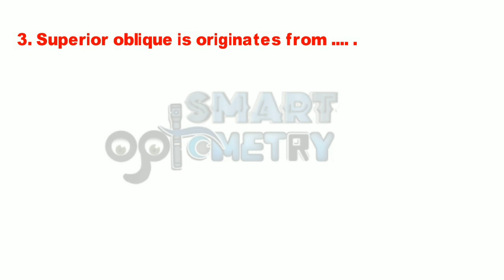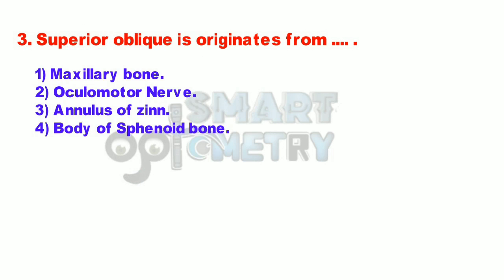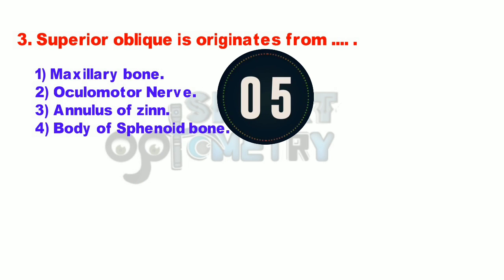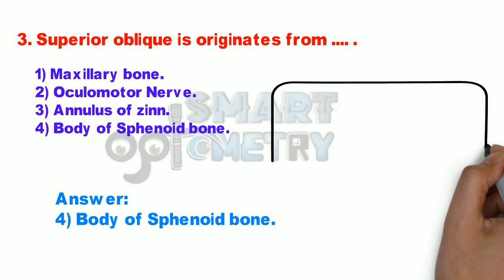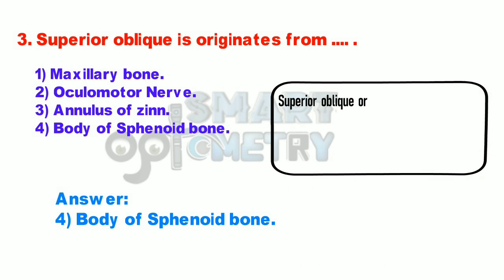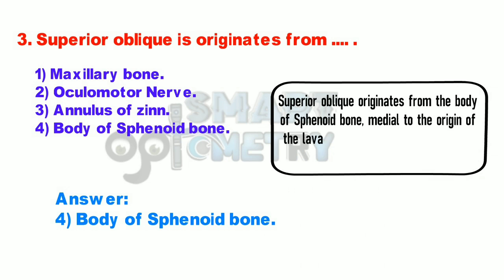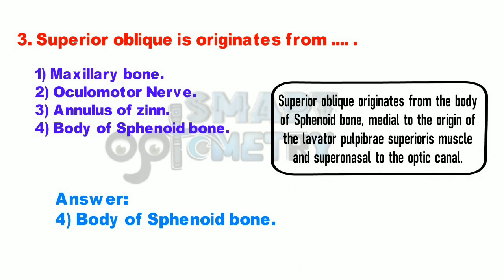Q3. Superior oblique originates from: 1. Maxillary bone. 2. Oculomotor nerve. 3. Annulus of Zinn. 4. Body of sphenoid bone. Superior oblique originates from the body of sphenoid bone, medial to the origin of the levator palpebrae superioris muscle, superior and medial to the optic canal.